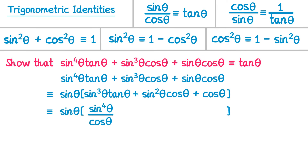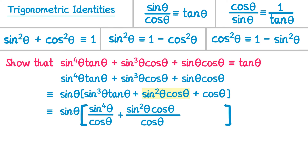Since we've got a fraction over cos theta, we write all remaining terms over cos theta as well. The next term, sin squared theta cos theta written over cos theta, requires multiplying top and bottom by cos theta, giving sin squared theta cos squared theta over cos theta. The final term, cos theta over cos theta, requires multiplying the top by cos theta, giving cos squared theta over cos theta. Now all terms share the denominator cos theta and can be combined as one fraction.